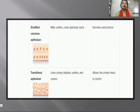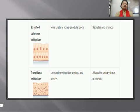Stratified columnar epithelium consists of multiple layers of column-shaped cells. It is mainly present in the male urethra and some glandular ducts, and it helps in secretion and protection of these glands from external damage.